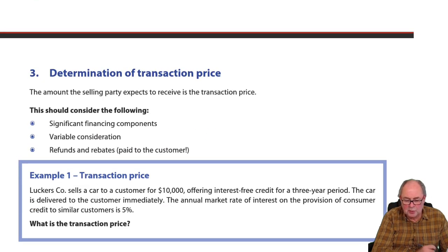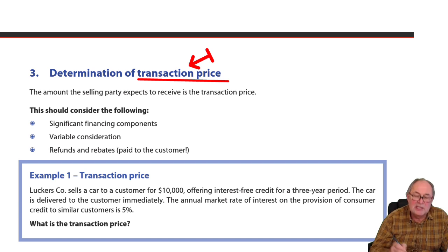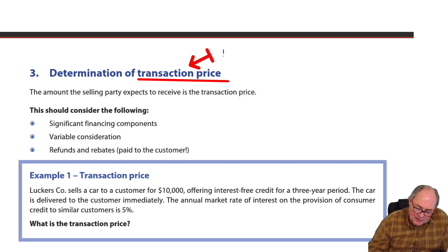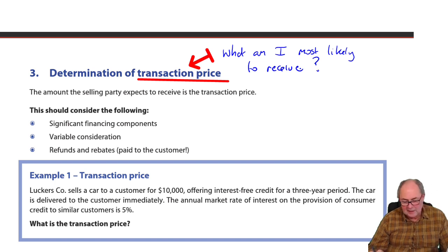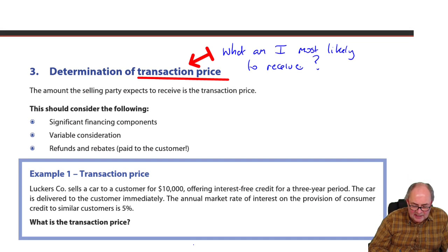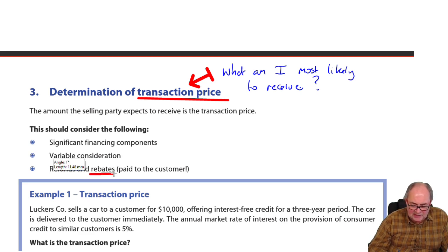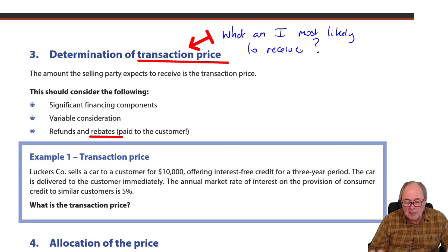Stage three: sort out the price. What you're really trying to do is simply say, what is it that I'm most likely to receive? It could be that the customer might get a volume rebate or something like that — so how likely is it that the rebate will be payable? Take that into account. Lots of judgment, but use your common sense to assess what you're most likely to be paid.